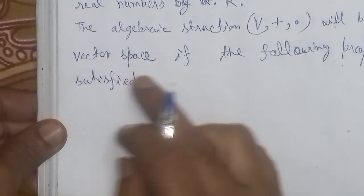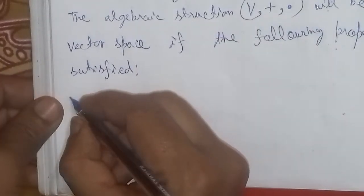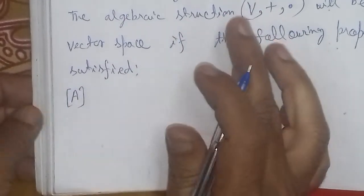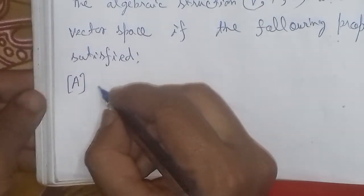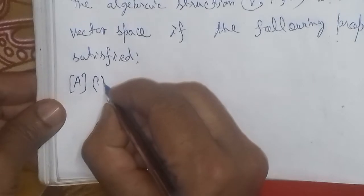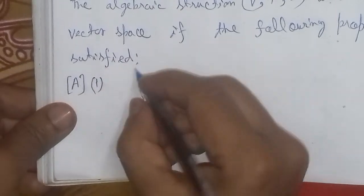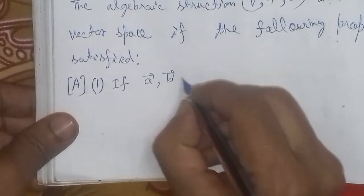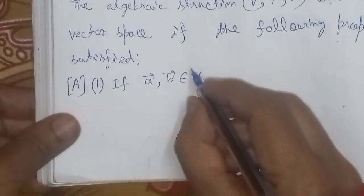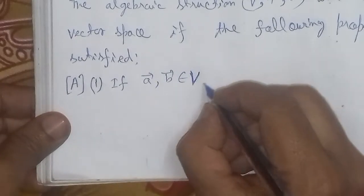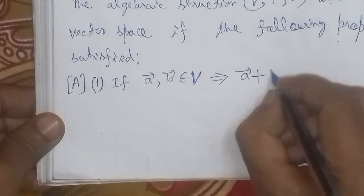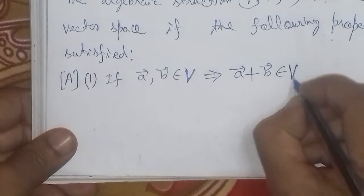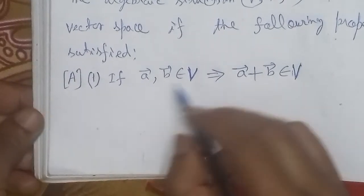We know that a vector space has 10 properties, and these 10 properties are divided into sections. The first section is A, which has 5 properties related to the Abelian group. If vector A and vector B belong to V — if there are two vectors in V — we know that the sum of two vectors also belongs to V. This is our first property: it is called the Closure property.